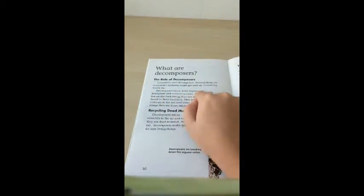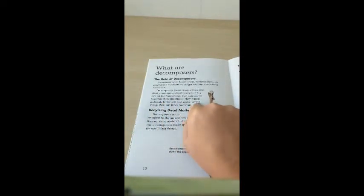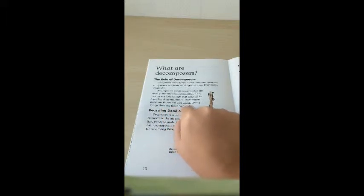Decomposers break down waste and dead plants and animal material. They live on the food energy that can still be found in these materials. They return nutrients to the soil and water. Living things then use those nutrients.